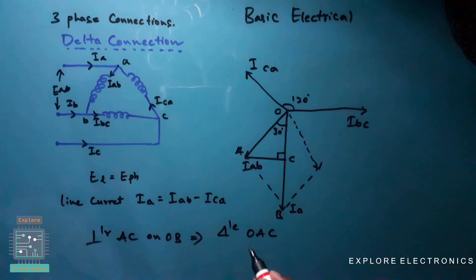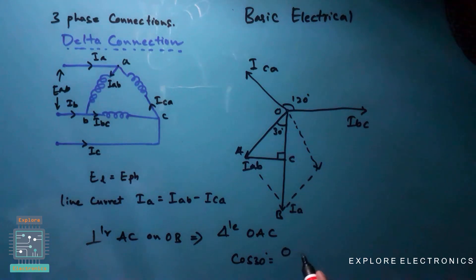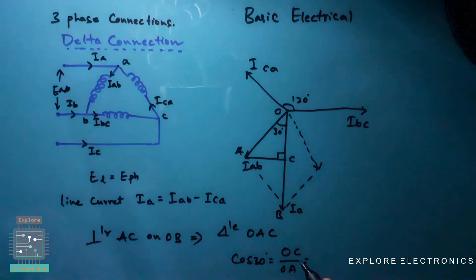So we are going to get a right angle triangle OAC. Now what is cos 30 here? So cos 30 degree, if I am going to write, it is OC divided by OA. So what is OC here? The total here it is Ia. Up to here if you take it is half of Ia, so OC is Ia divided by 2, divided by what is OA, it is Iab.